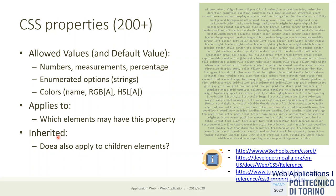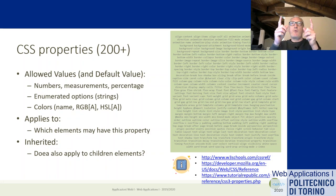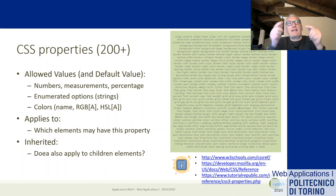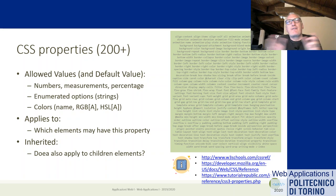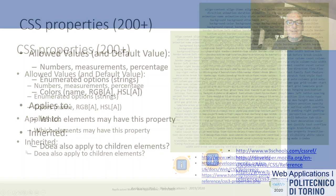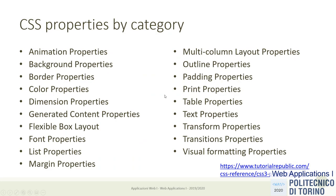You can imagine that every HTML element already has all these properties with an initial value - you can basically just modify initial values, you cannot create these properties. Every property may apply to every element, or some properties may only apply to some elements. In the documentation of each property, we have information about whether it applies to all block elements, only to inline elements, or only to form elements, for example. Also, most properties will be inherited, but some will not be inherited by all children. For example, the width of an element should not be inherited by its children, because otherwise every child would try to be as large as the container.